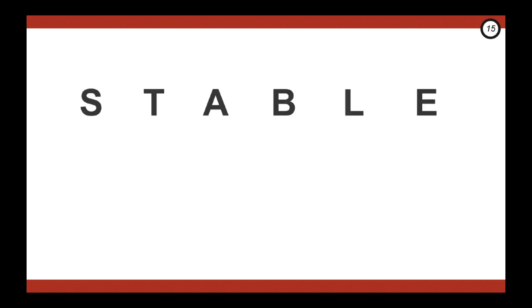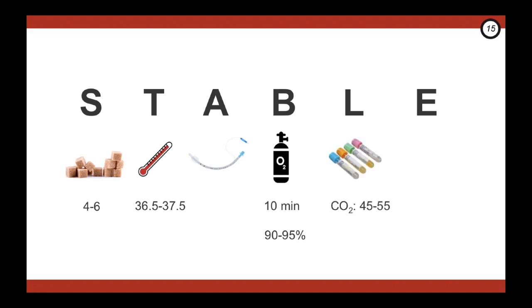The goals of resuscitation is to have this kid stable, and yes, this is another mnemonic. S is for sugar between 4 to 6, T is for temperature between 36.5 and 37.5, A is for a patent airway, B is for oxygen sat of 90 to 95 at 10 minutes, L is for labs with a target CO2 of 45 to 55, and E is for emotional support for the family.